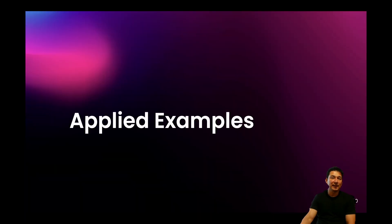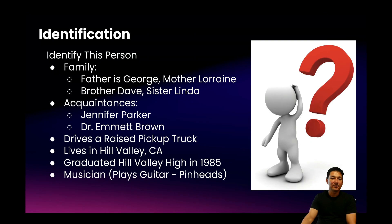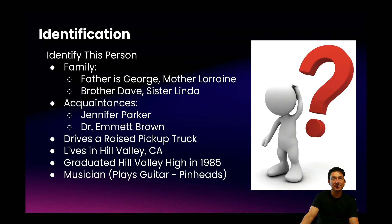Now let's talk about how we can apply entities on the Symbol platform to specific real-world examples. Since entity recognition is all about identification and recognition of certain persons, places, things, characteristics, traits, and attributes, I thought it would be interesting to play a little game of identification — name this person. I'm going to describe certain properties or characteristics of this given individual, and we're going to try to guess who they are.